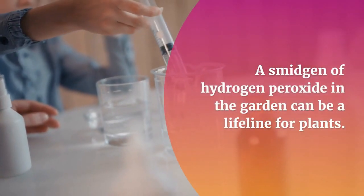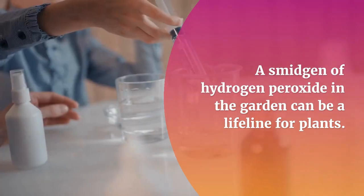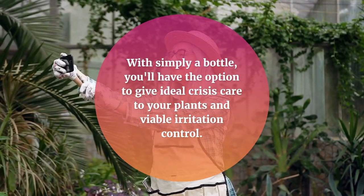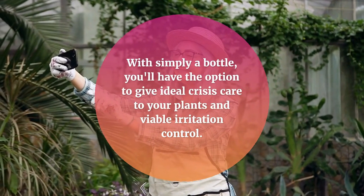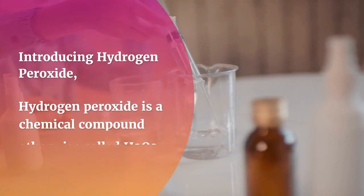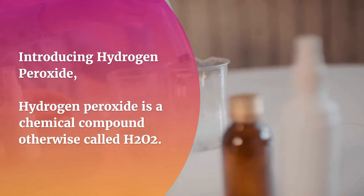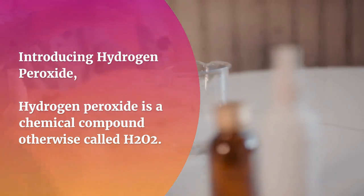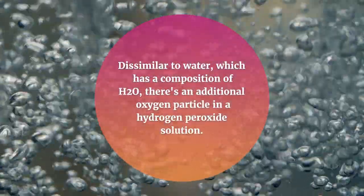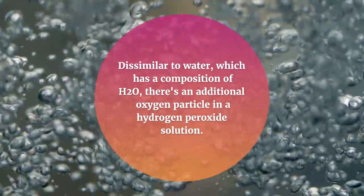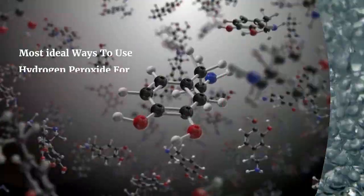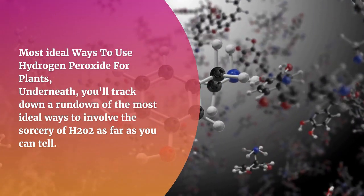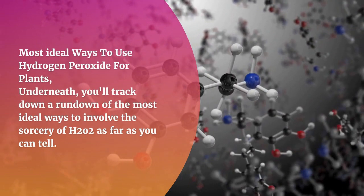A smidgen of hydrogen peroxide in the garden can be a lifeline for plants. With simply a bottle you'll have the option to give ideal crisis care to your plants and viable irritation control. Hydrogen peroxide, otherwise known as H2O2, is a chemical compound. Unlike water, which has a composition of H2O, there is an additional oxygen particle in a hydrogen peroxide solution.